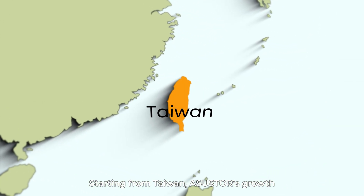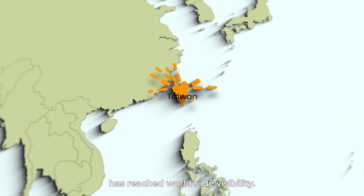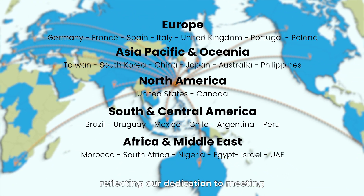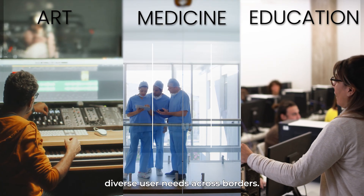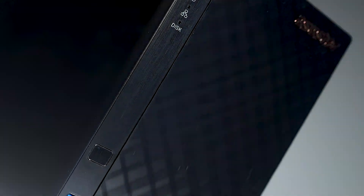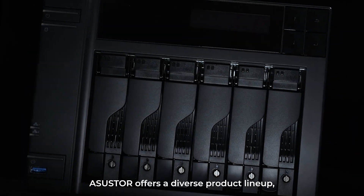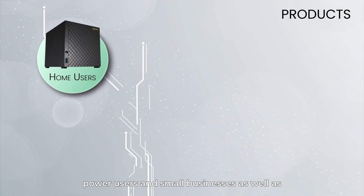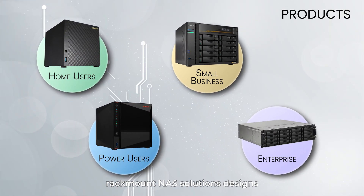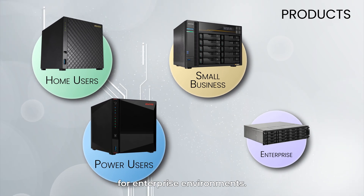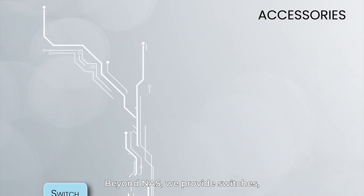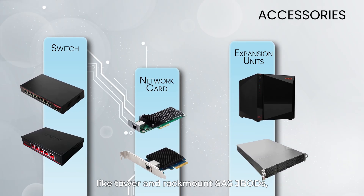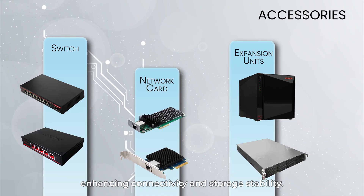Starting from Taiwan, ASUSTOR's growth has reached worldwide visibility — from Asia to America and Europe, reflecting dedication to meeting diverse user needs across borders. ASUSTOR offers a diverse product lineup including tower NAS models suited for home users, power users, and small businesses, as well as rack mount NAS solutions designed for enterprise environments. Beyond NAS, they provide switches, network cards, and expansion devices like tower and rack mount SAS JBODs, enhancing connectivity and storage scalability.